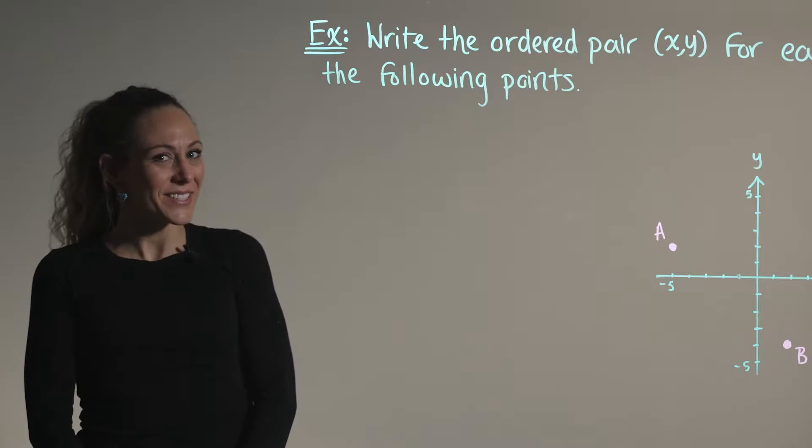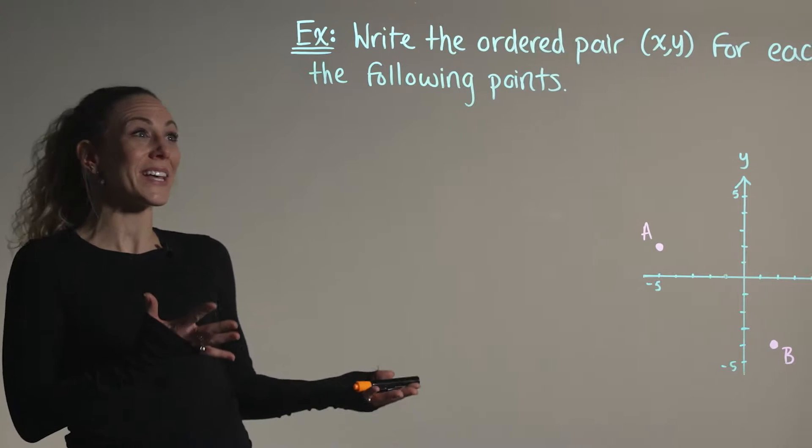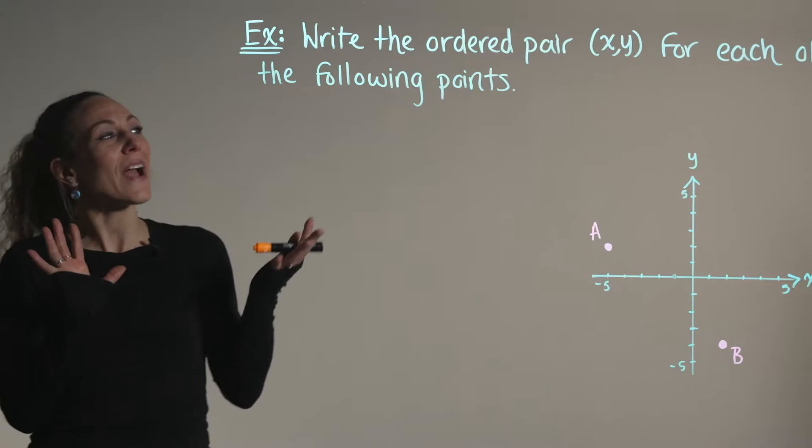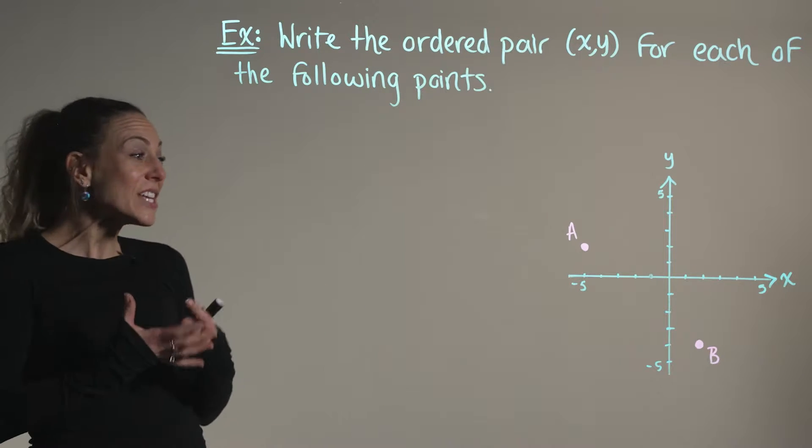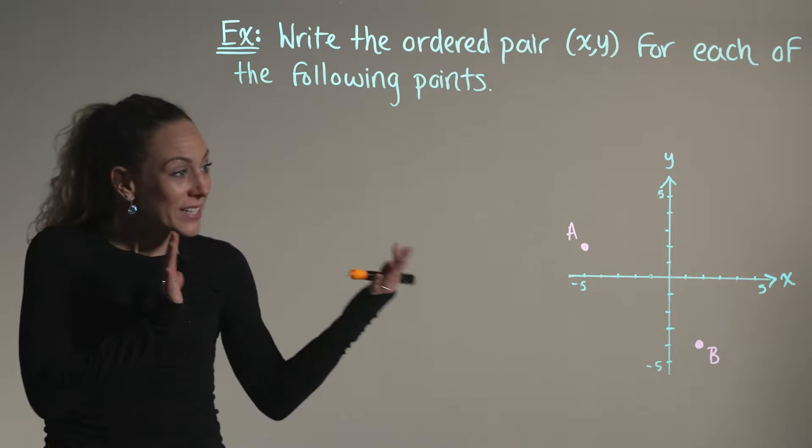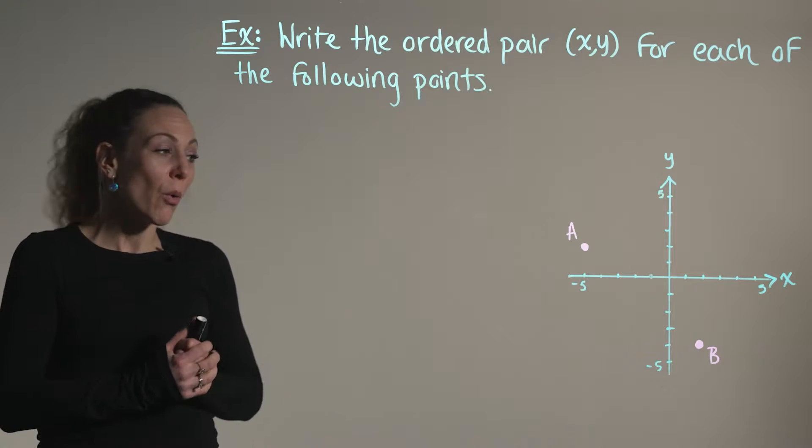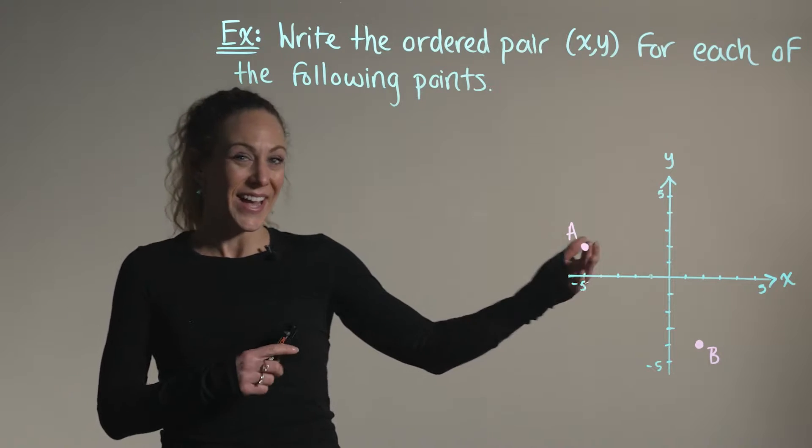Let's go ahead and practice our graphing skills with the following example. Here we're asked to write an ordered pair (x,y) for each of the points. We can see on our graph that we have two points: point A and point B.